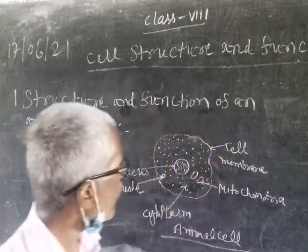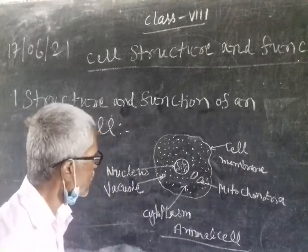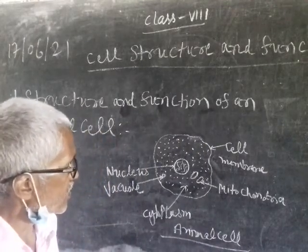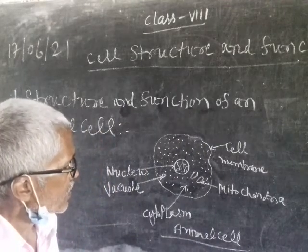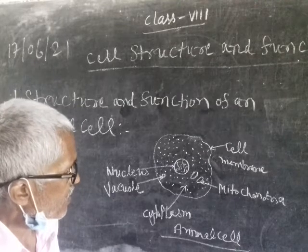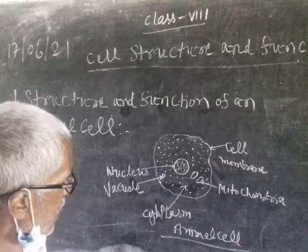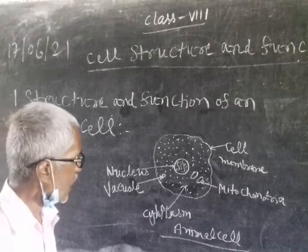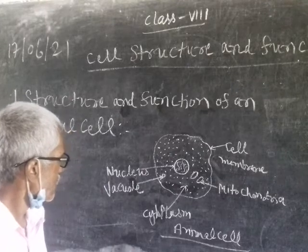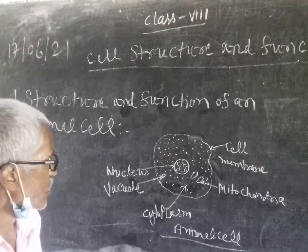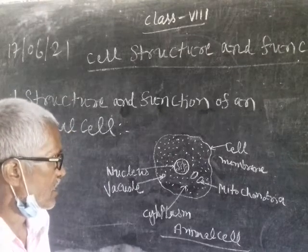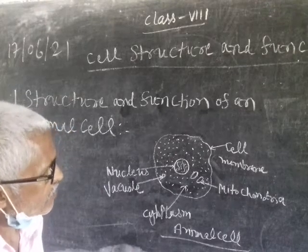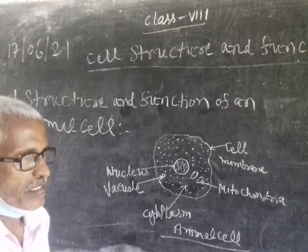The main parts of an animal cell are: cell membrane, mitochondria, cytoplasm, vacuole, and nucleus. The first part is cell membrane.